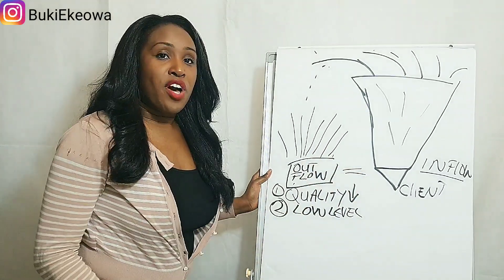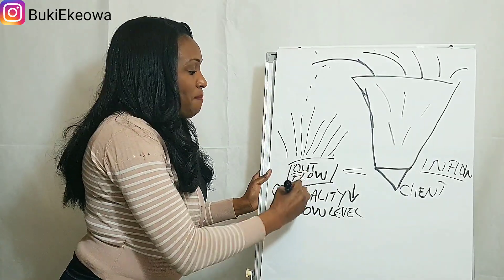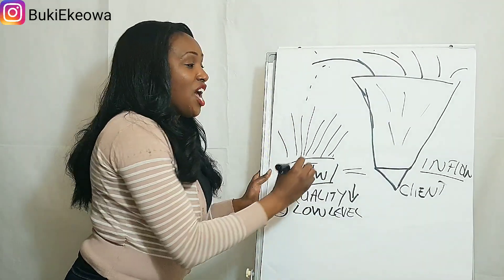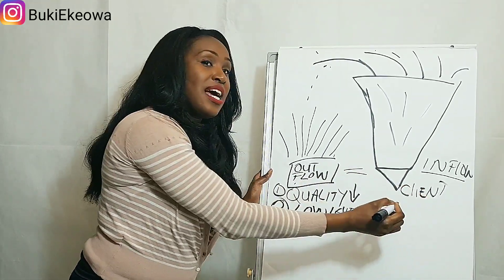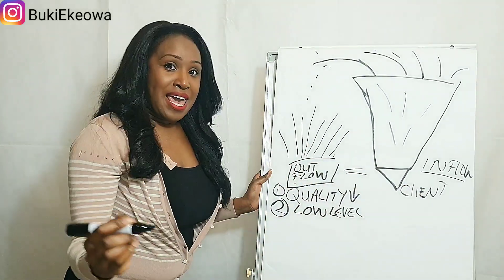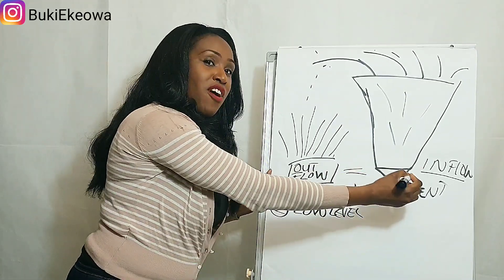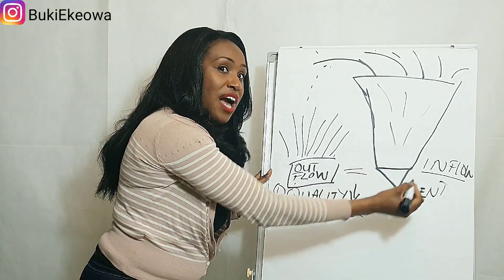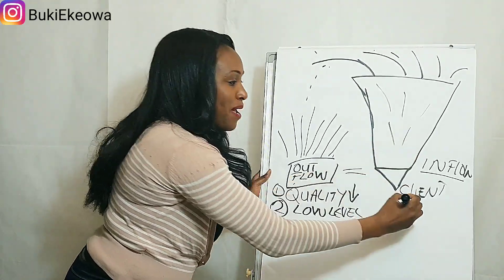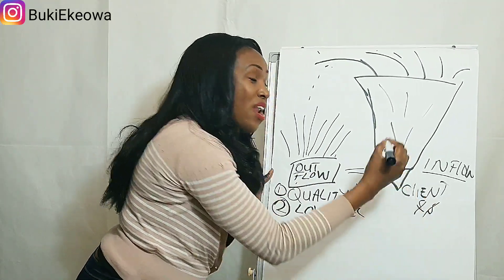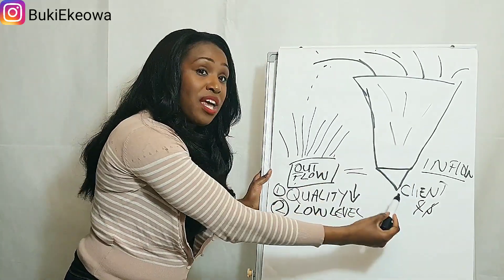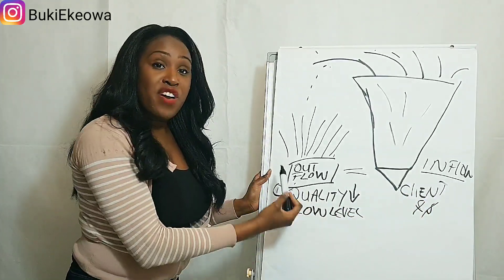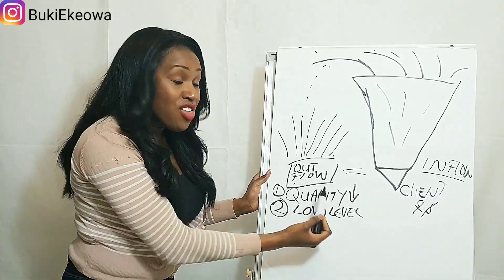A typical conversion rate is around one percent — so with a hundred messages or activities going out, you should get at least one client. Our aim is obviously a higher conversion rate, so with a hundred activities you'd want three, four, or five clients booking calls or generating a financial reward from your investment, whether that's time or money.